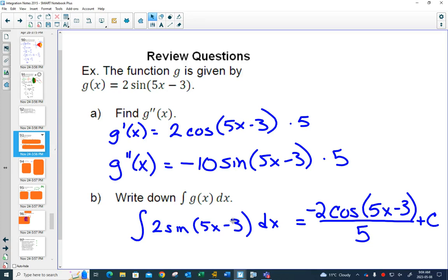And then integrating, if we're working backwards with a simple chain rule, we just have to undo the simple chain rule by dividing by 5.